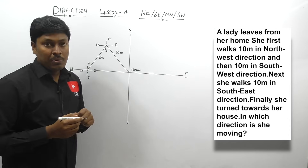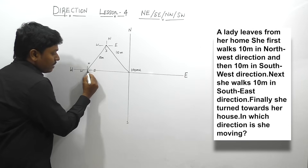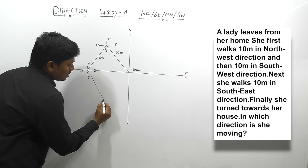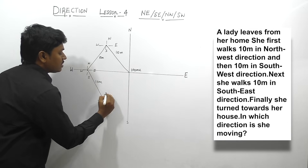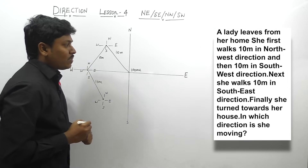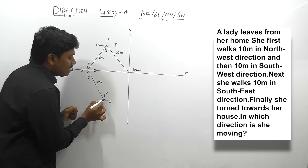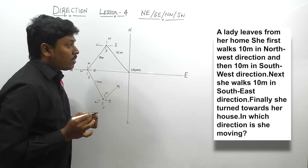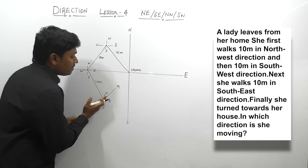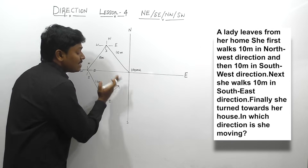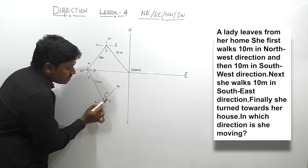Next, she walks 10 m towards south-east. From that point, again she is walking 10 m towards south-east. She reached this point — this is also 10 m. Draw a small direction: north, south, west and east. The question is: finally she turned towards her house. In which direction is she moving? From this point, if she turned towards her house, she will be moving in the north-east direction.